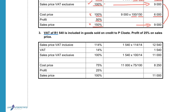A VAT of 1,540 is included in the goods sold to Kluta — so the VAT is given this time. The 14% equals 1,540. Sales price excluding VAT is 100% and including VAT is 114%. To calculate the sales price including VAT: 114 divided by 14 times 1,540 gives 12,540. To calculate the sales price excluding VAT: 100 divided by 14 gives 11,000.